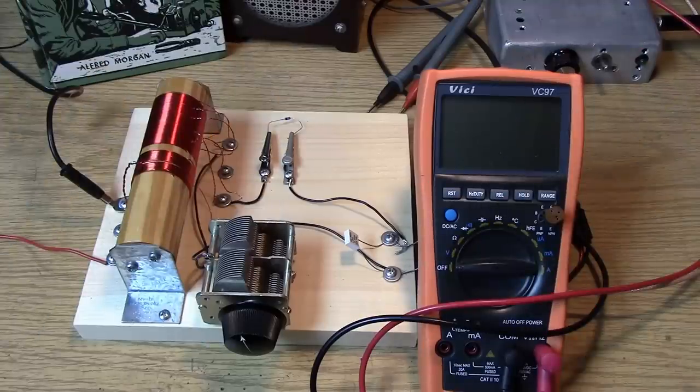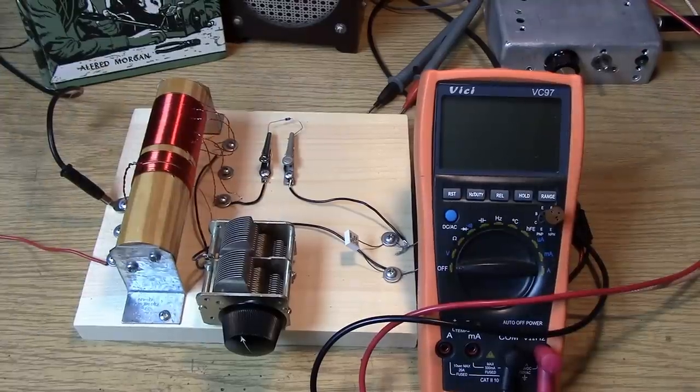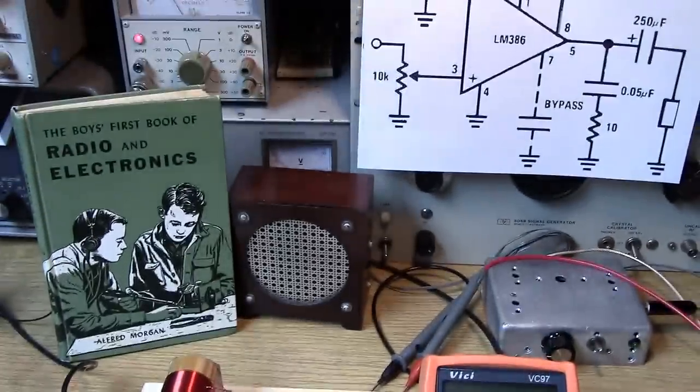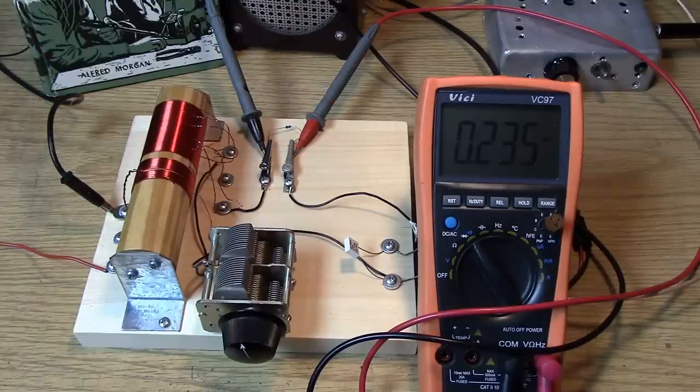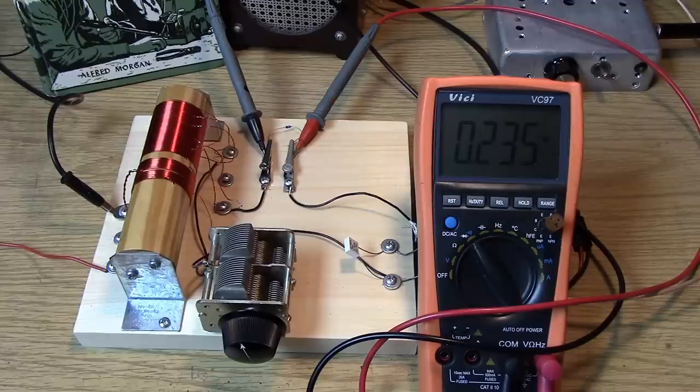The 1N5711, the old HP diode. It's doing a good job. It's just about identical to the BAT85's forward drop at this current, but doing a much better job detecting the weak signals. Isn't that interesting?